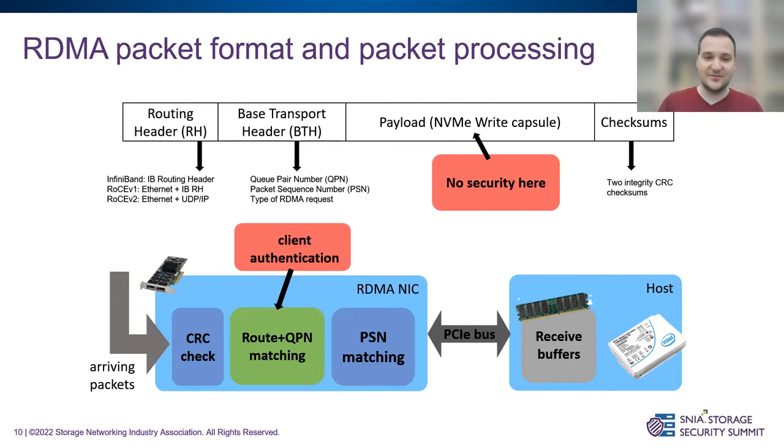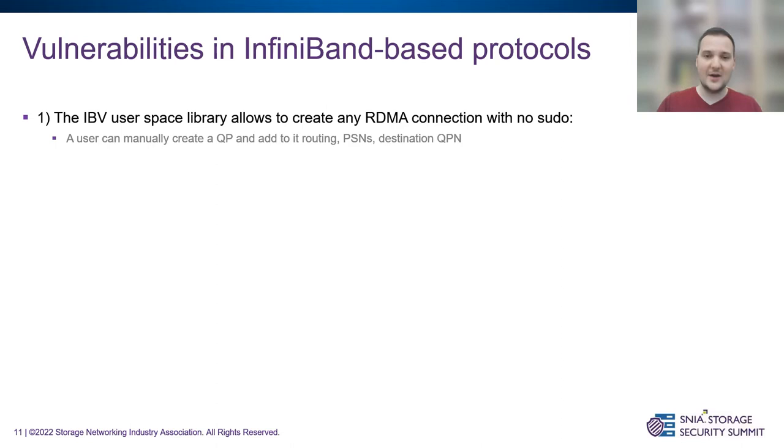What this actually means is that the entire authentication of the sender happens on the device at the moment of checking whether the connection exists. So if we can impersonate a connection that is privileged to write to the device, we can send any request to that device. I'll now show how this can be done in InfiniBand-based protocols.